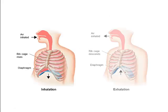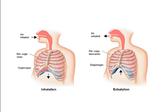During inhalation, you can see the diaphragm has moved down and the ribcage is expanded out — the cartilage associated with the ribcage allows it to be flexible. During exhalation, the diaphragm is much further up and the ribcage has come down, as the lungs are deflating and air is being pushed out.